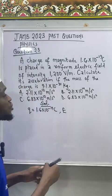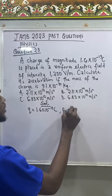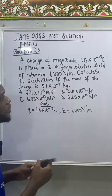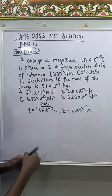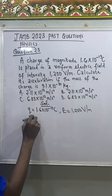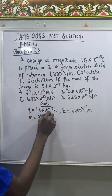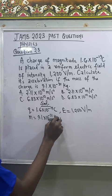And then we are also giving the mass of the charge as 9.1 times 10 to the power of negative 31 kilogram, and we are asked to calculate acceleration.